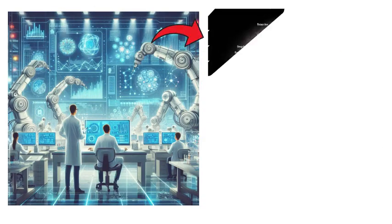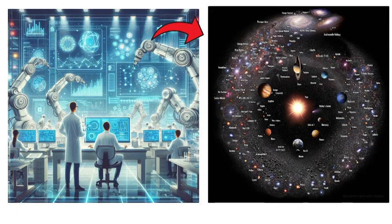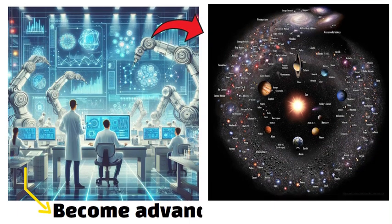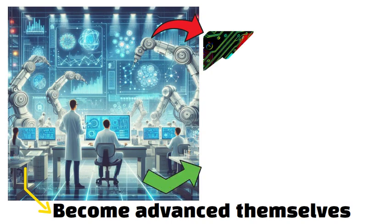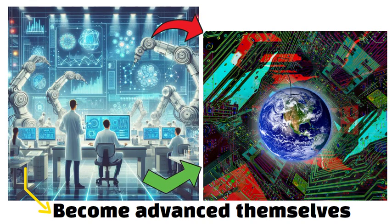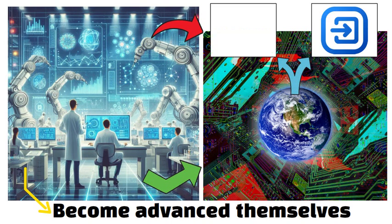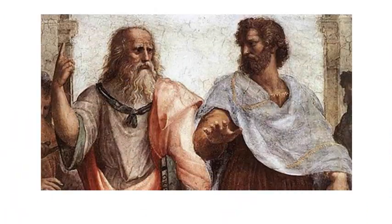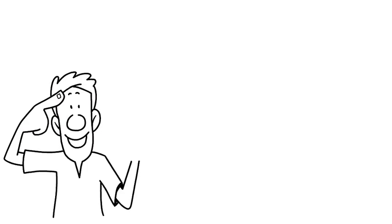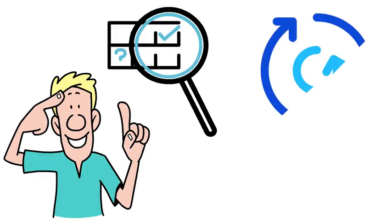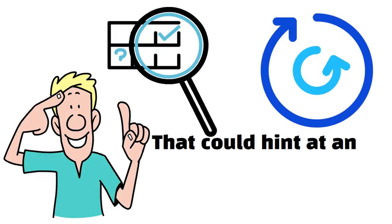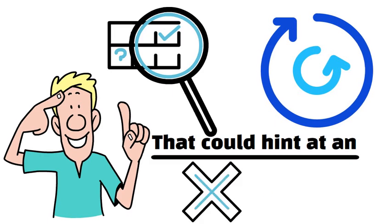If those simulated civilizations become advanced themselves, they could create further simulations inside their world, leading to a nested or recursive chain of universes. While compelling for philosophical debate, it's hard to test directly. Some scientists propose searching for glitches or irregularities in physics that could hint at an underlying code, but none have been confirmed.